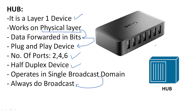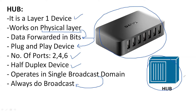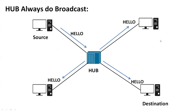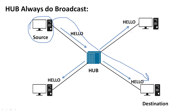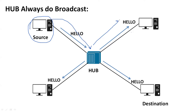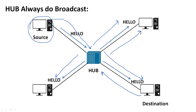The hub operates in a single broadcast domain, meaning every time this device does a broadcast. In real life a bridge looks like this, and in Cisco Packet Tracer this is the symbol for the hub. When a source PC wants to forward a hello packet to a destination, the hub will forward that packet to every single PC in the network. The destination will reply, and that reply will also be forwarded to everyone in the network.